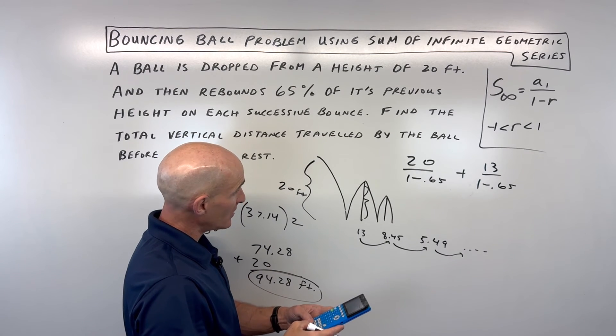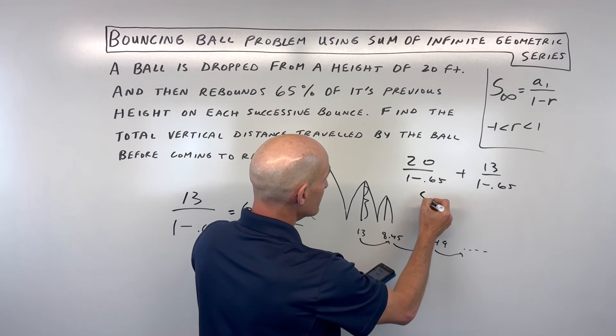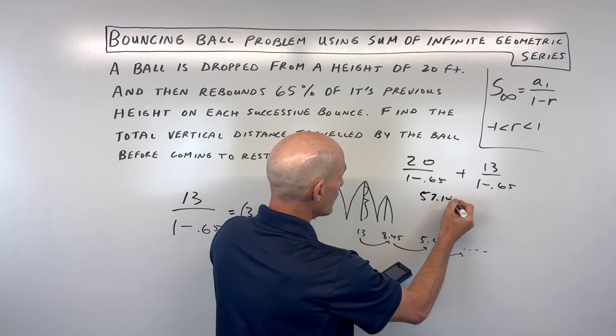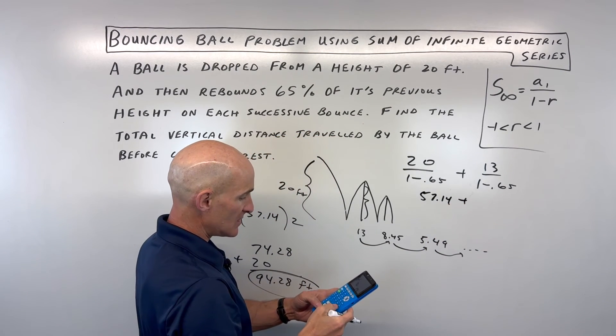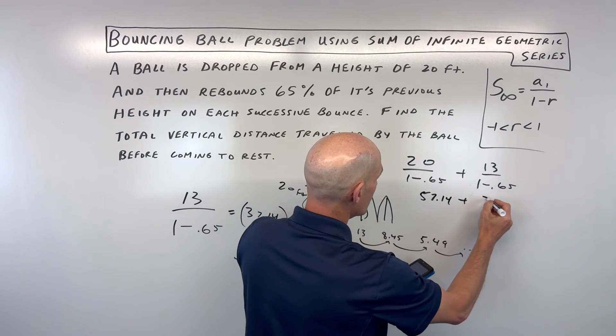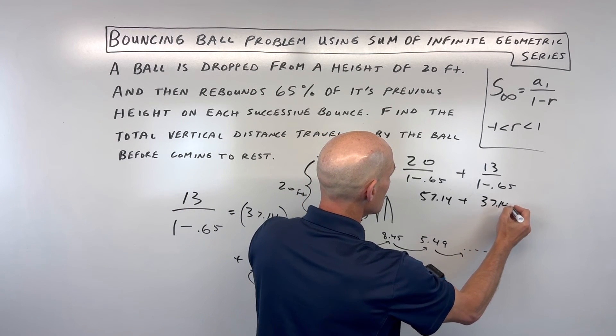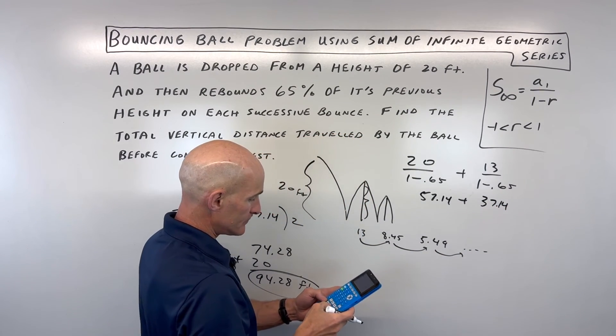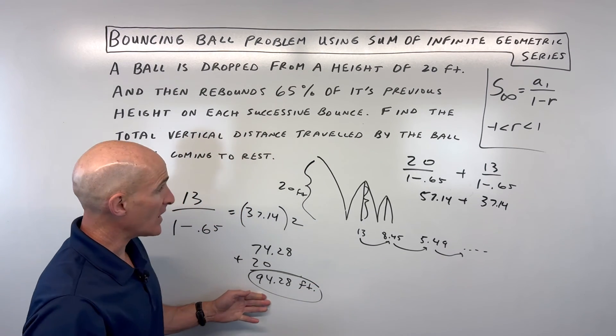Let's see what this comes out to. So 20 divided by 0.35 is about 57.14, and here we have 13 divided by 0.35, which is 37.14. Add those together, 94.28.